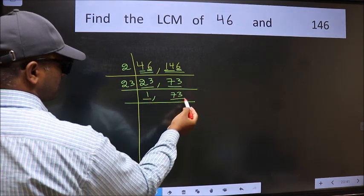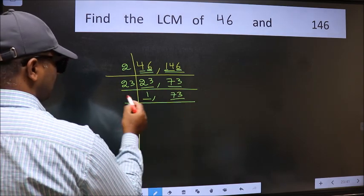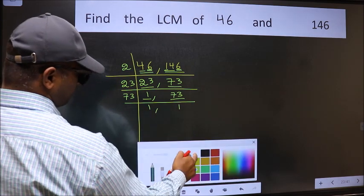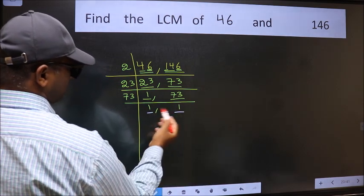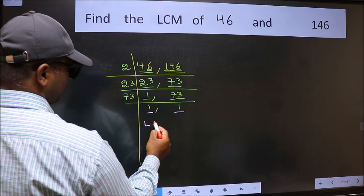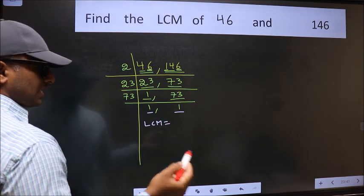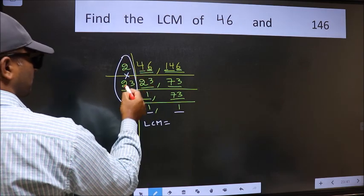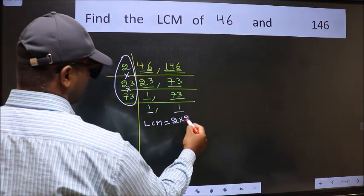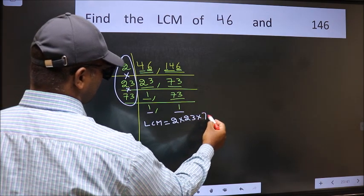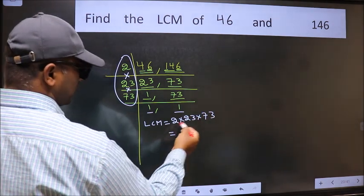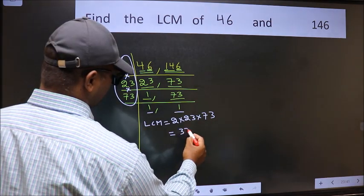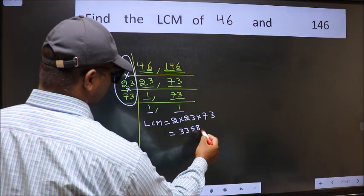So focus on the next number 73. 73 is a prime number, so 73×1 is 73. We got 1 in both places. So our LCM is the product of these numbers: 2×23×73. When we multiply these numbers we get 3358 is our LCM.